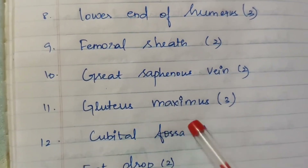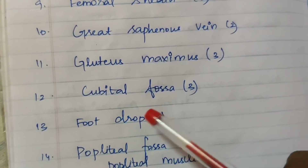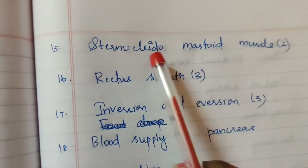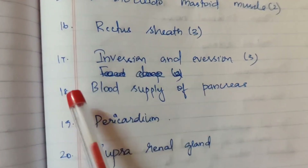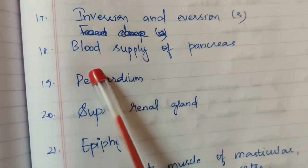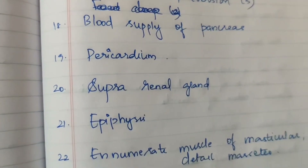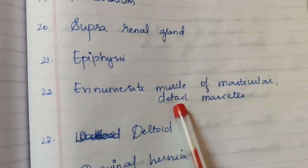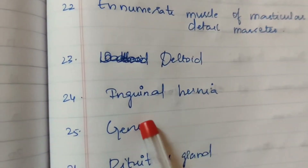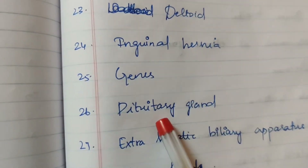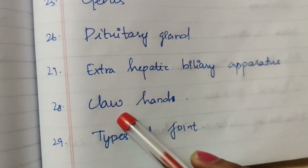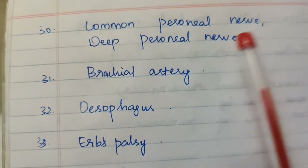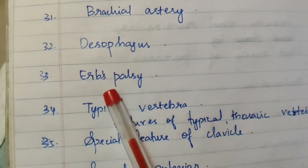Great saphenous vein, gluteus maximus — 3 times, cubital fossa, foot drop, popliteal fossa muscles, popliteal muscle. Sternocleidomastoid muscle — 2 times. Rectus sheath. Inversion and eversion — 3 times. Blood supply of pancreas — single time. Pericardium, suprarenal gland, epiphysis, muscles of mastication with detailed masseter. Deltoid, inguinal hernia, knee joint, pituitary gland. Typical vertebra, features of typical thoracic vertebra.